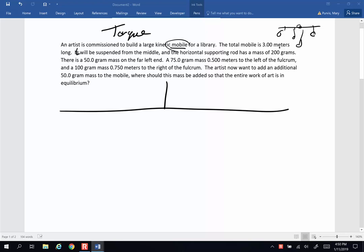The total mobile is three meters long. So this is a big art installation that's going to go into a library. So from one end to the other is three meters. It is suspended from the middle, so it's got a rope attached to the middle.